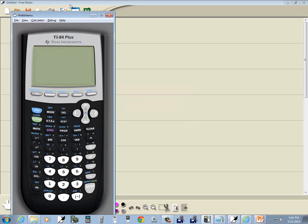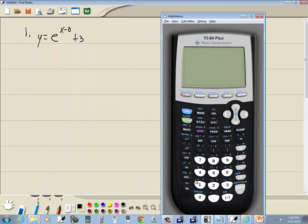So let's graph this. We'll press our y equals, press clear to clear our words there. Now to get to your e, there's a couple different places you can get to it, but the best one for graphing purposes is by doing second and then your ln. This is your natural log button.